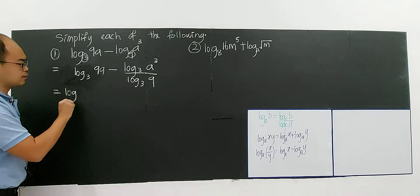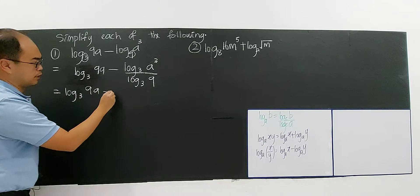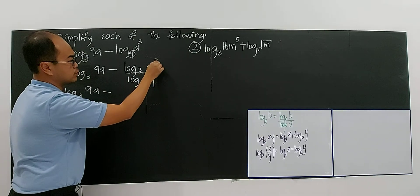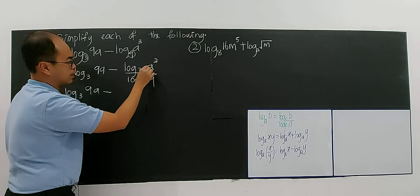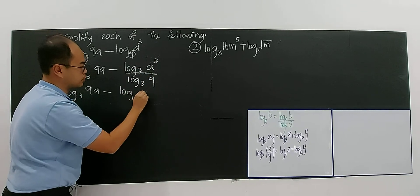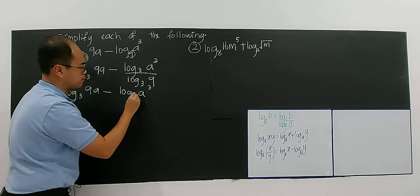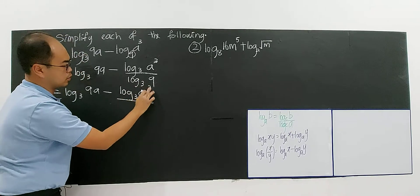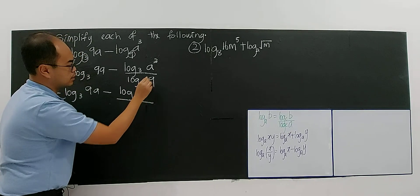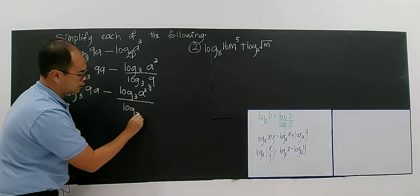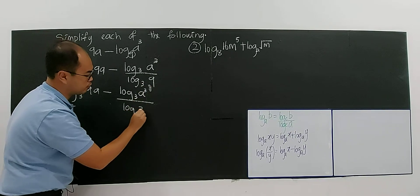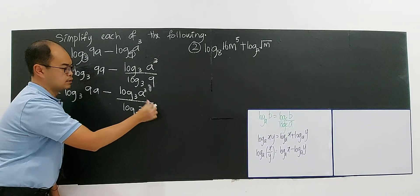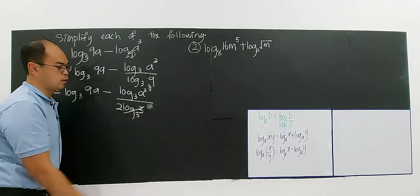Now I look at the situation. For this case, you have log A³ base 3. But this denominator is log 9 base 3. Now 9 is 3 to the power of 2, so you can bring the 2 down in front and log 3 base 3 is 1. So the denominator becomes 2.